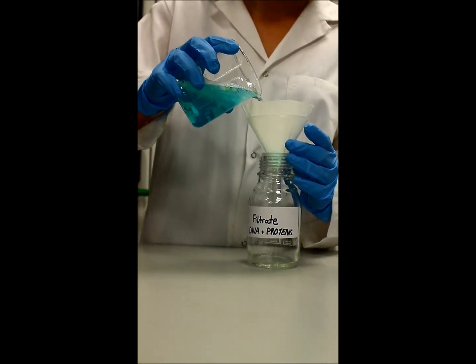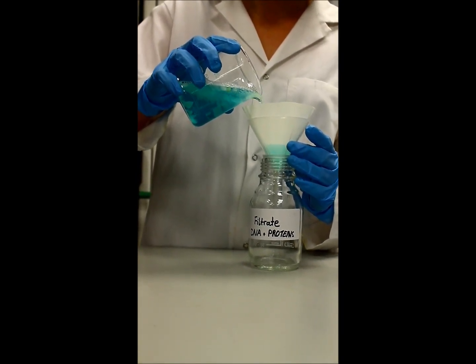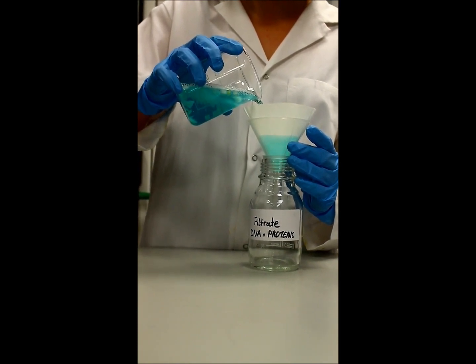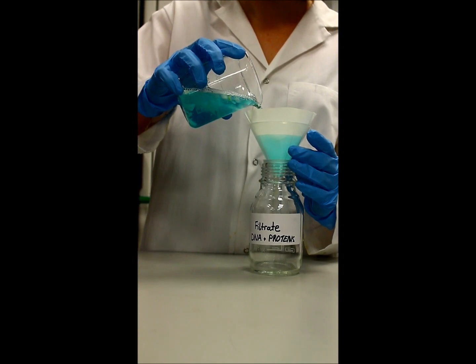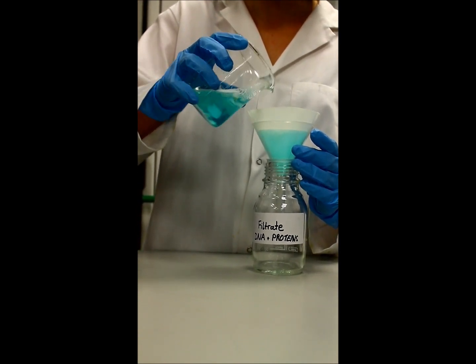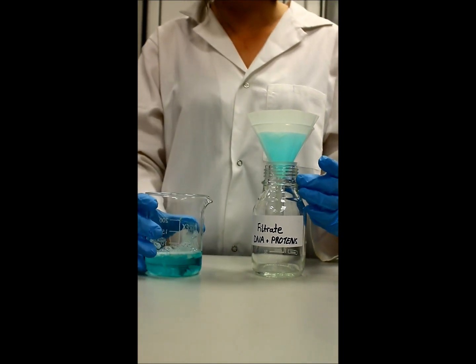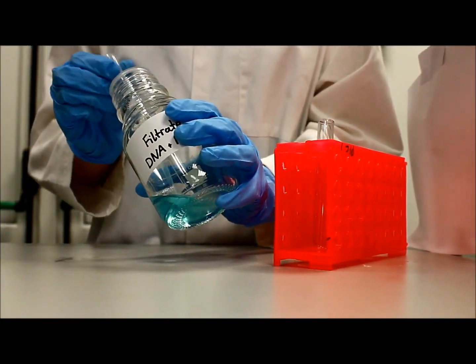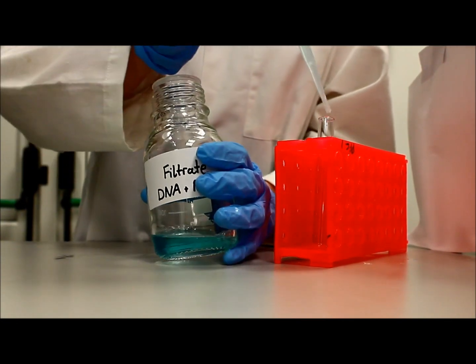You then filter the mixture to remove any other cell parts so your filtrate now contains only DNA and proteins. Place the sample of your filtrate into a boiling tube.